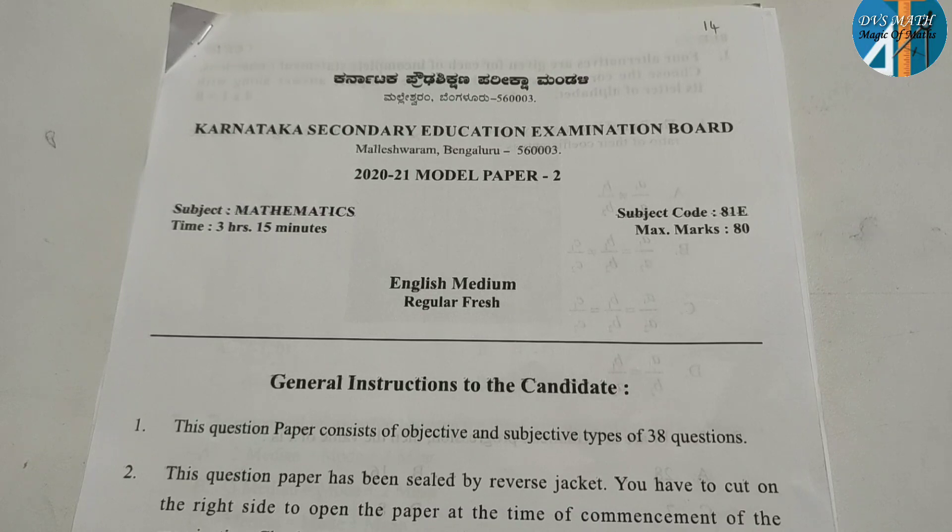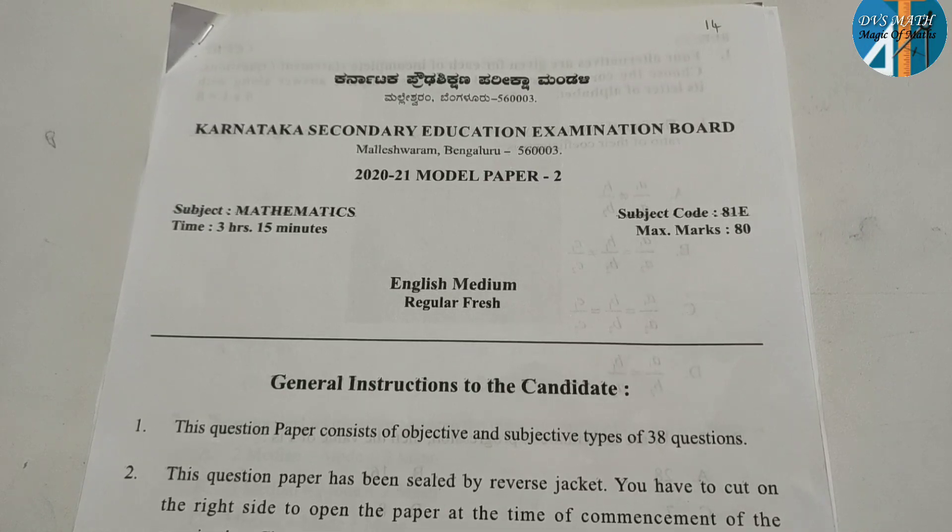In the last year's question papers, we have two advantages. In the construction lesson, what is the advantage? In the last year, the construction of tangent is two marks, but in this second model paper, the construction of tangent is three marks. In the same way, the construction of triangle last year's paper is three marks, but in this second model paper is four marks. So you have two marks advantage in this session.